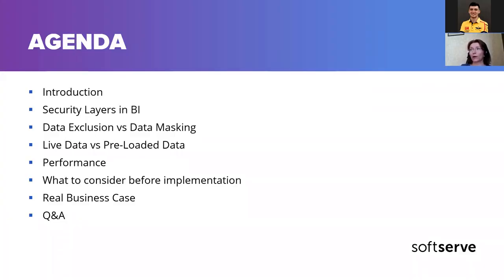First of all, we will talk about why data security is important in BI, different levels or layers of security in BI platforms, differences between data exclusion and data masking — which is more related to row-level security. We'll look at general common aspects and more detail on row-level security, differences between live and preloaded data, performance from both UI and server perspectives, important things to consider when planning row-level security, and we'll review an interesting real business case.